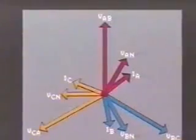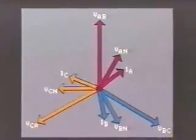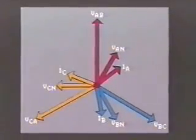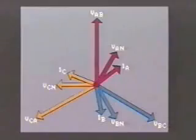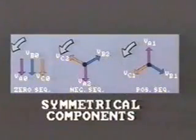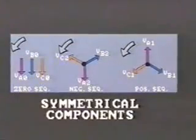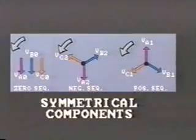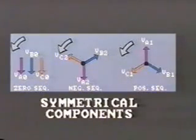In the last segment we used phasor diagrams to show how conditions at a fault location become distorted from the normally balanced voltages and currents. The phasor diagram is really a geometric or mathematical representation. We're now going to use another mathematical representation and break the phasor diagram into symmetrical components. This allows us to go a stage further in our analysis of fault conditions.